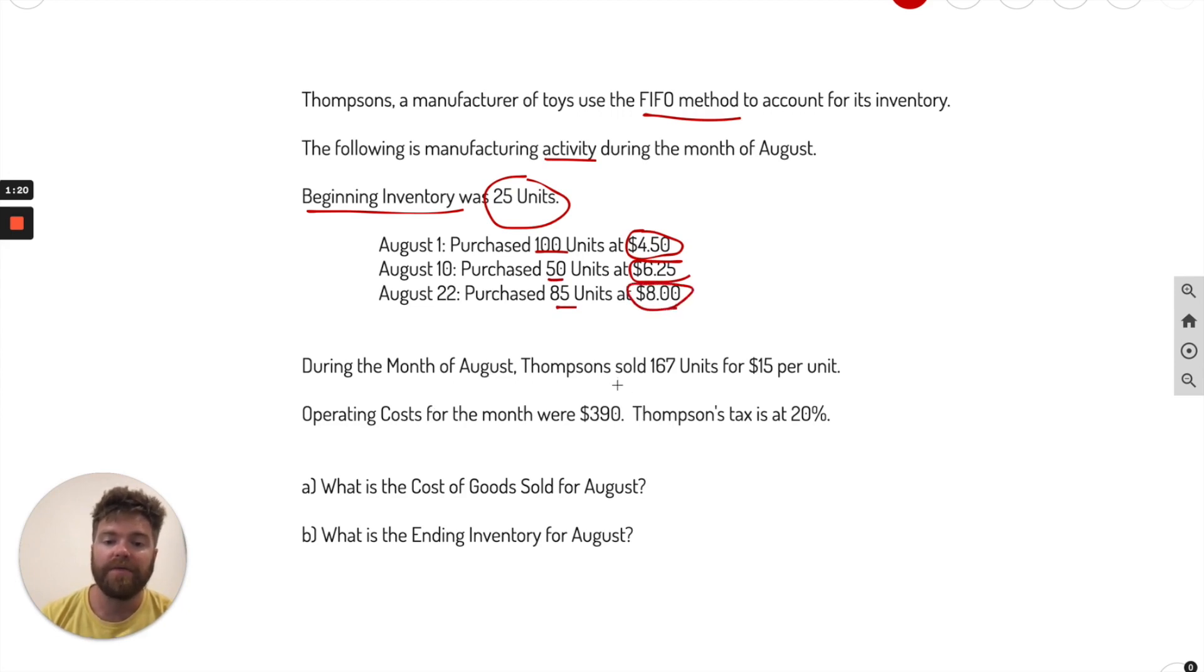During the month, they sold 167 units at $15 each. Operating costs were $390. And the tax was 20%. So we're going to do this in pieces here. We're going to start with figuring out the cost of goods sold and the ending inventory, and then we'll go from there.